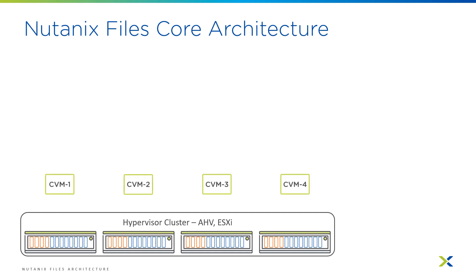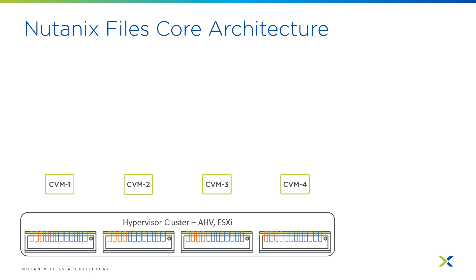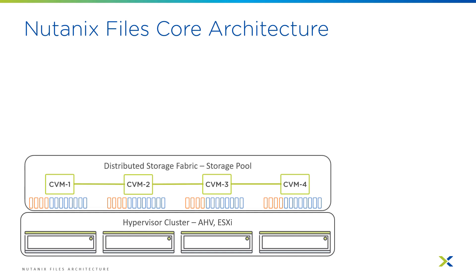On top of the hypervisor that you choose, we instantiate controllers on every node — we call them Controller VMs or CVMs. If you have a four-node cluster like in this example, you have four CVMs; if you had a 16-node cluster, you would have 16 CVMs. Each one of these controllers, via hypervisor-specific PCI pass-through, takes ownership of those internal drives in each node. The CVMs communicate with each other and form a distributed storage fabric, and within that we'll have a single storage pool across all nodes, whether it's a three-node cluster or a 32-node cluster.